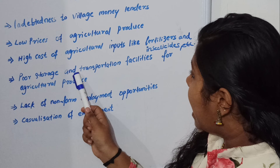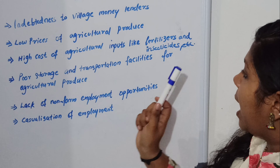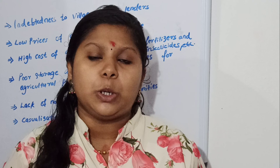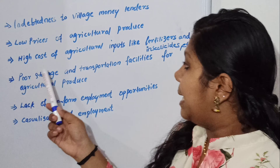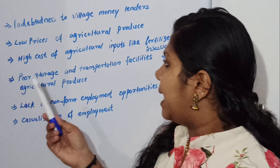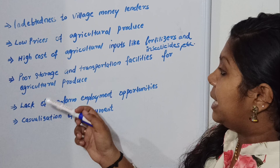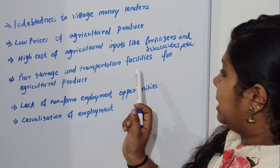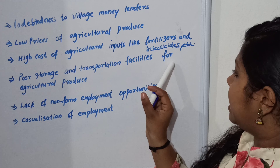Next, poor storage and transportation facilities for agriculture produce. We all know the farmers produce all things but they are not getting enough space to keep the things properly — that is poor storage. When we produce things, we want to sell them in the market, and for that we need transportation facilities. When the farmers want to sell or transport anything, they are not getting enough storage and transportation facilities. That is what is meant by poor storage and transportation facilities for agriculture produce.